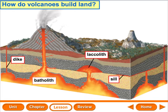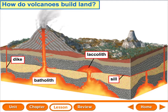How do volcanoes build land? Sometimes magma cools and hardens before it ever reaches the surface. Usually lava erupts and cools and hardens above ground, forming land you can see. But sometimes it cools and hardens underneath within the crust and mantle, forming different landforms and types of mountains. A dike is when magma cools and hardens in a vertical crack. If it does the same thing horizontally, it's called a sill.